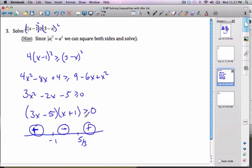So my solution, I want it bigger than or equal to 0. So I get x is less than or equal to negative 1, and x is bigger than or equal to 5 thirds.